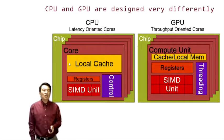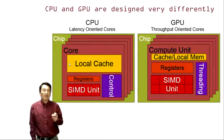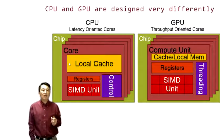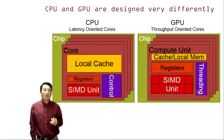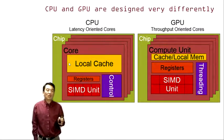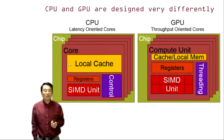CPUs and GPUs are designed very differently. CPUs are designed as latency-oriented cores, shown on the left-hand side, and GPUs are throughput-oriented cores, shown on the right-hand side. At a high level, CPUs tend to have larger local cache while GPUs tend to have smaller cache or local memory. GPUs tend to have a larger number of registers, mostly to support a large number of threads, whereas CPUs have fewer registers and support a smaller number of threads. GPUs also tend to have a larger number of SIMD execution units, while CPUs have fewer of those.